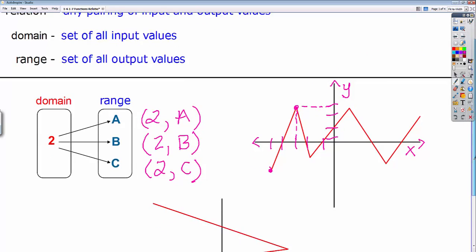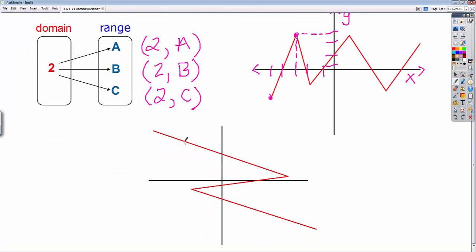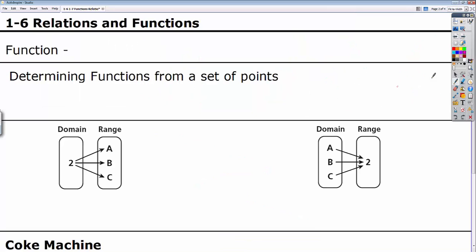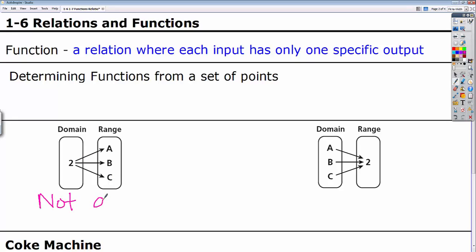Alright, we have another example down here. This is also a relation. You have input values, output values, anything that can be graphed on an XY axis is a relation. Now, relations get special when we start calling them functions. So your definition for function is a relation where each input has only one specific output. Each input has one specific output. So if we take a look at this example that we had on the last page, the 2 going to the A and the B and the C. This is actually not a function. I'm going to use FXN to abbreviate function. The reason being is that this input has three outputs.